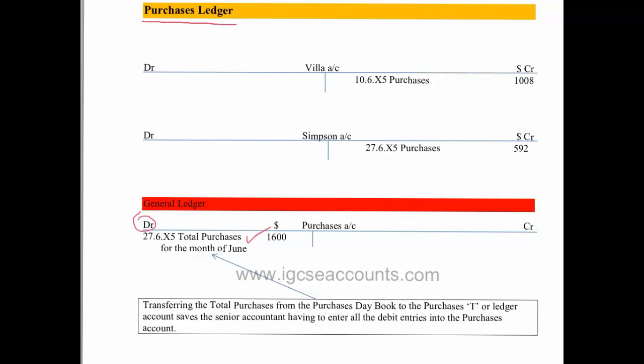The creditors of stock or inventory. We had two creditors — Villa and Simpson. Because they sent goods to us, the amount of $1,008 and $592 will be credited to each of their individual accounts in the purchases ledger. Then rather than doing two debit entries we simply put the total credit purchases of inventory for the month, which was $1,600.